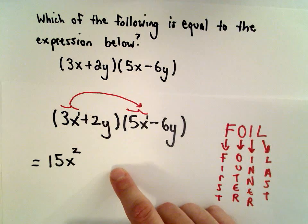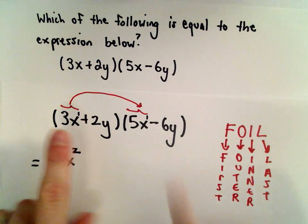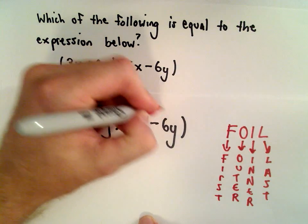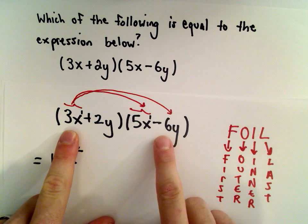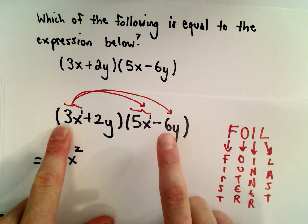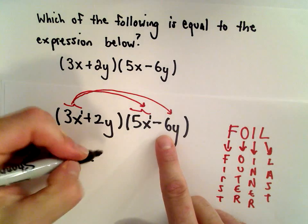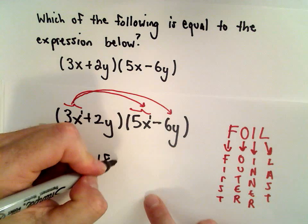The outer, that's the ones furthest apart. Now I take 3x and multiply it by negative 6y. So 3 multiplied by negative 6 is negative 18, and x and y aren't like bases, so we just write it as negative 18xy.